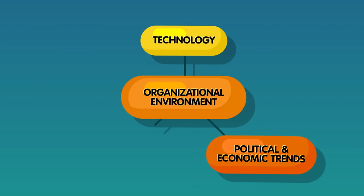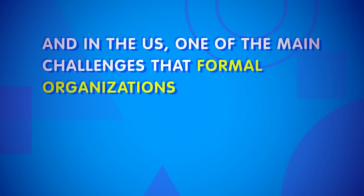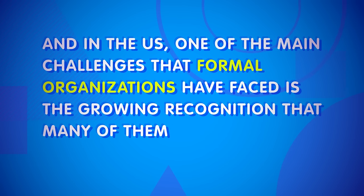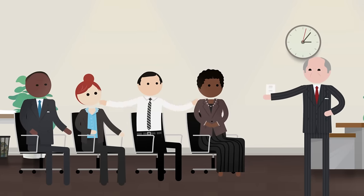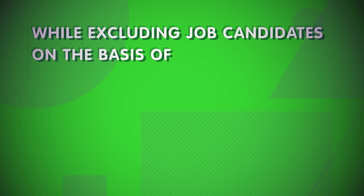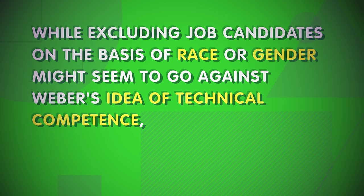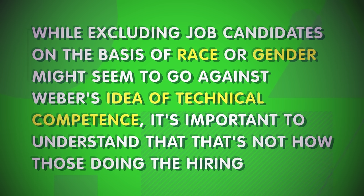But in addition to the problems that bureaucracy can cause, American formal organizations in particular have faced many challenges over the last century due to changes in what's called the organizational environment — simply put, the environment in which organizations exist and operate. The organizational environment includes things like technology, political and economic trends, and population patterns. In the US, one of the main challenges that formal organizations have faced is the growing recognition that many of them were either racist or sexist, or both. Following the civil rights and feminist movements in the 1960s and 70s, hiring practices that excluded people who weren't white men came under increasing fire. While excluding job candidates on the basis of race or gender might seem to go against Weber's idea of technical competence, often those doing the hiring believed that those who were excluded were simply incapable of doing the work. Until they were forced to do otherwise by changes in the organizational environment, many were quite happy to go on excluding large swaths of their talent pools.